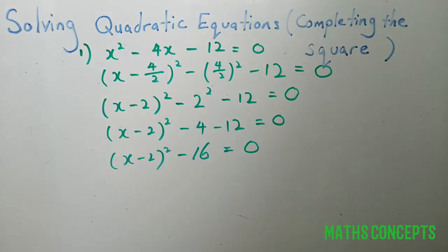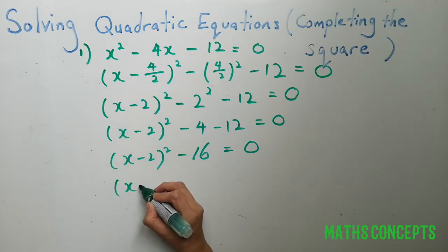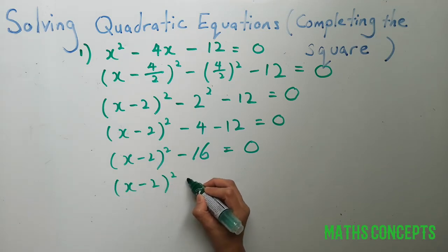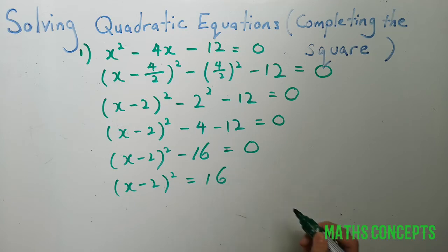All right, so we can bring the 16 to the right side. X minus 2 squared equals to 16 on the right side.